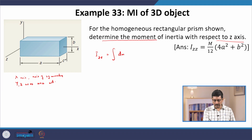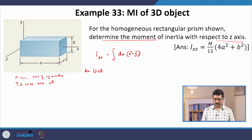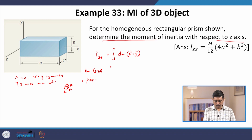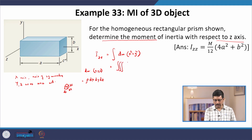We need to take each mass element dm located at some point x, y, z inside the prism, and then the distance from the z axis is x squared plus y squared. This mass element dm, if the density of the material is rho, then the volume of this element is a little cubic cell with width dx, height dz and breadth dy. So the volume dx times dy times dz times density gives us the mass, making this a three-dimensional integral: rho dx dy dz times (x squared plus y squared).